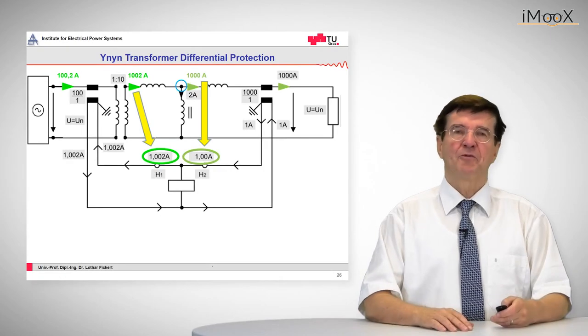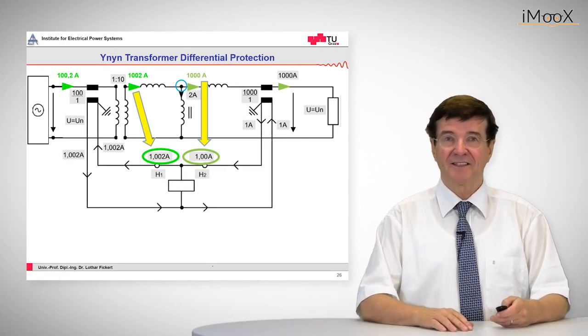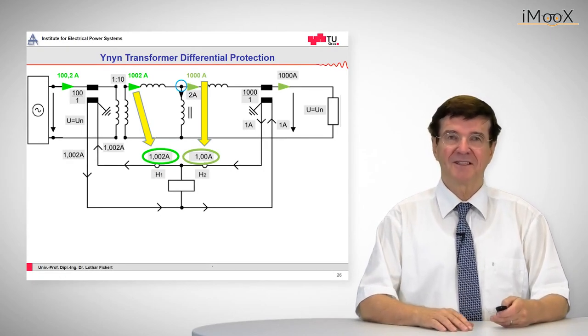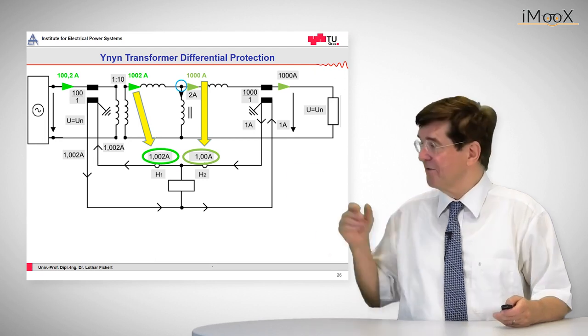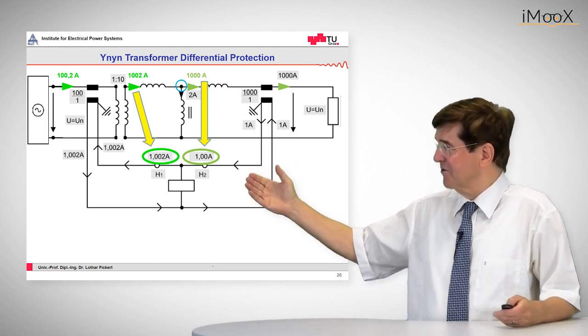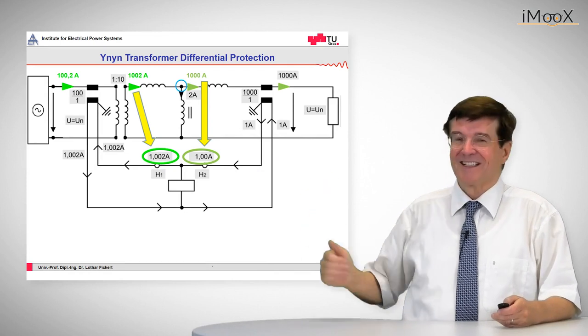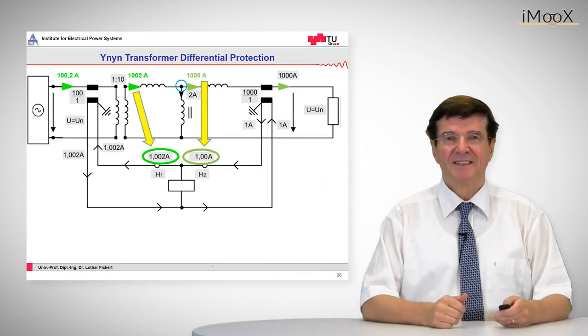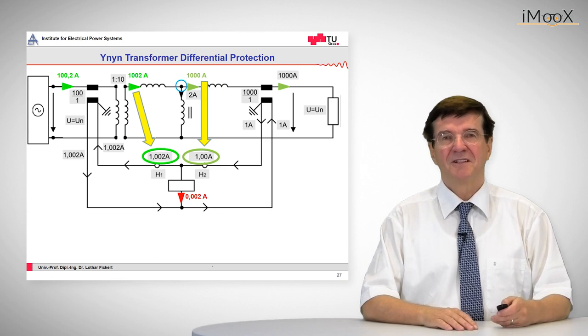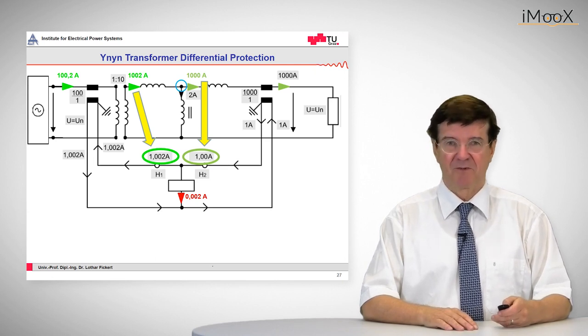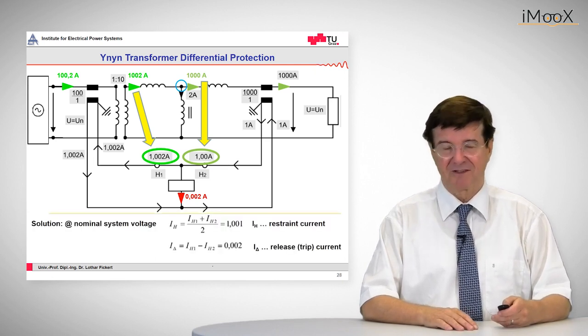And that means if we see what is the effect on the secondary side of these current transformers, we see that we have on the left side 1.002 amps and on the right side 1.00 amps. So the difference is 0.002 amps, which is very small but it is a differential current.